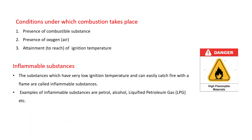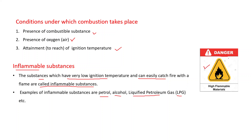From these activities we find the conditions necessary for combustion: presence of a combustible substance, presence of oxygen, and attainment of ignition temperature. Substances which have a very low ignition temperature and can easily catch fire are called inflammable substances. Examples are petrol, alcohol, and liquefied petroleum gas (LPG). These substances carry a danger symbol indicating they are highly inflammable or flammable.